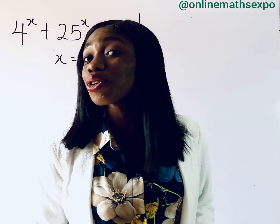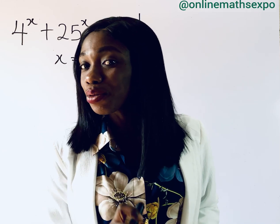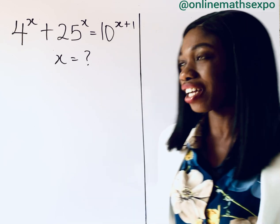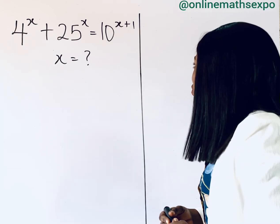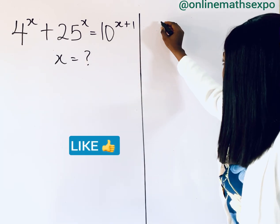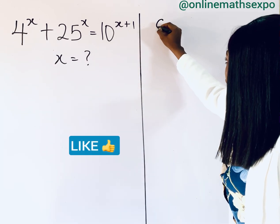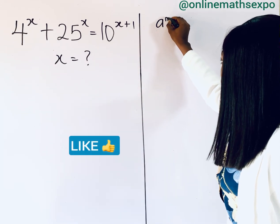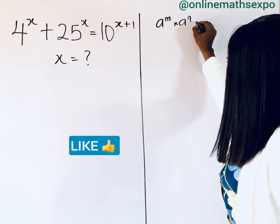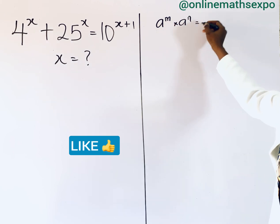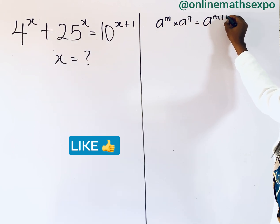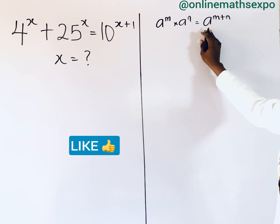To do this, we are going to remind ourselves of some tips and some of the rules of exponents, which say that if you have a to the power of m multiplied by a to the power of n, it gives you a to the power of m plus n.